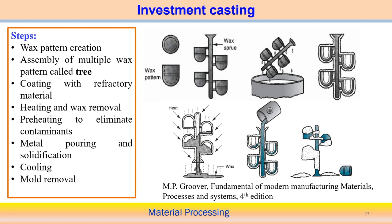Looking at the steps: first, we create the wax pattern as per the required dimensions. The wax pattern can be made as many small individual components assembled together. This means using this process, small components can be made in large quantities in a single run. The wax pattern is then dipped into a liquid slurry so that a coating covers the surface of the wax pattern.